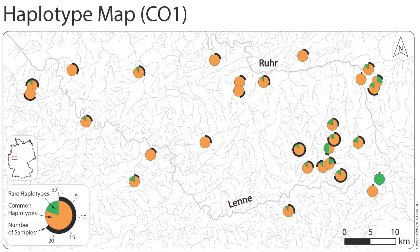This map shows the distribution of the two haplotype groups, with each circle representing one population. By calculating FST values between populations, we were not able to find single isolated populations. However, an AMOVA test revealed that there is a very weak difference in variability between populations in the East and West. Most of the variability is shared across all populations.